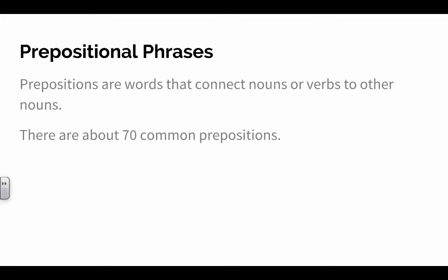So there are about 70 common prepositions. There are more than that, actually, but these are the ones that are sort of the core group. Basically, they connect and they kind of modify either a noun or a verb.